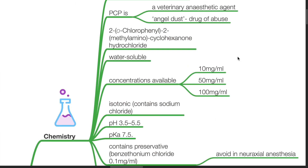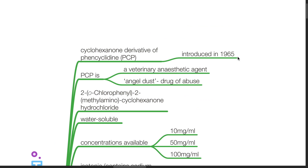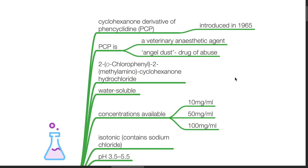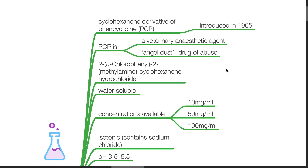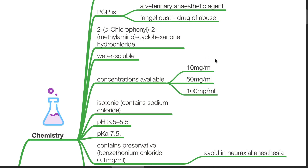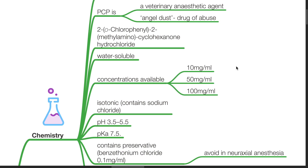Chemistry. Ketamine is a cyclohexanone derivative of phencyclidine, introduced in 1965. PCP is a veterinary anesthetic agent, also known as angel dust, a drug of abuse. The chemical name is 2-chloro-2-methylaminocyclohexanone hydrochloride. It is water-soluble. Concentrations available are 10 mg/ml, 50 mg/ml, and 100 mg/ml.